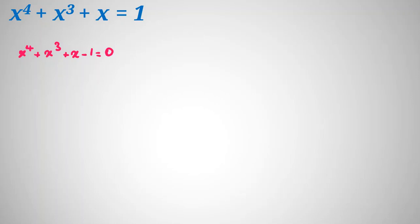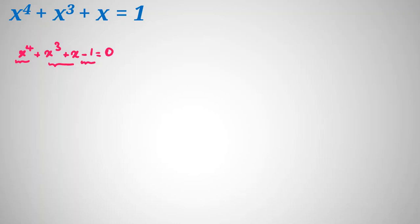They won't be 0 — you can check 2, negative 2 as well. Another way is to rearrange. If we consider x cubed and factor, we get x plus 1, but here we have x minus 1, so that's not useful. If we consider x to the 4 plus x, we get x cubed plus 1 — again not useful. But if we consider x to the 4 minus 1 and x cubed plus x, we get x squared plus 1 — that is useful! So let's rearrange: x to the 4 minus 1 plus x cubed plus x equal to 0.